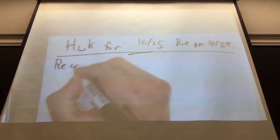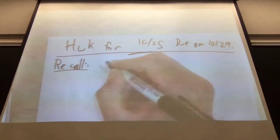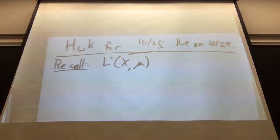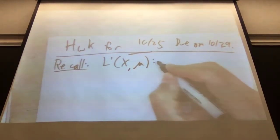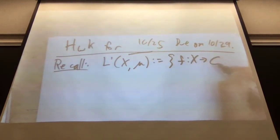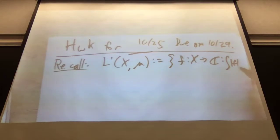Recall what we did last time. We defined the space L1. If we have a measure space X with some sigma algebra M and a measure mu, this is the set of all functions from X to the complex numbers, for which the integral of the absolute value of F d-mu is finite.